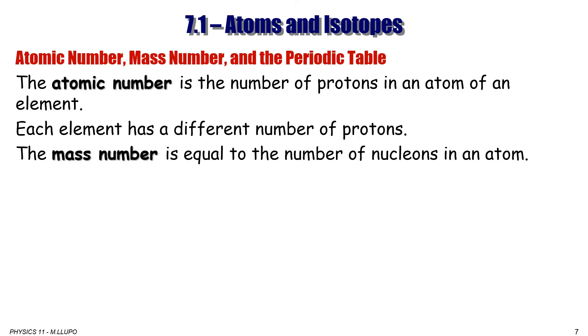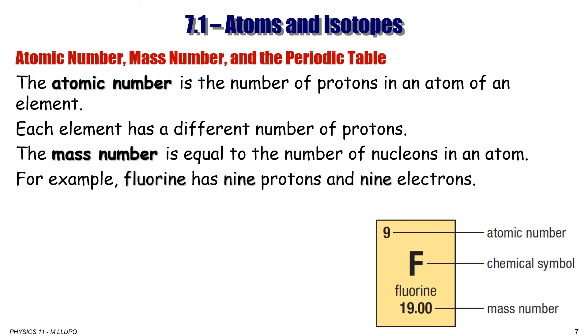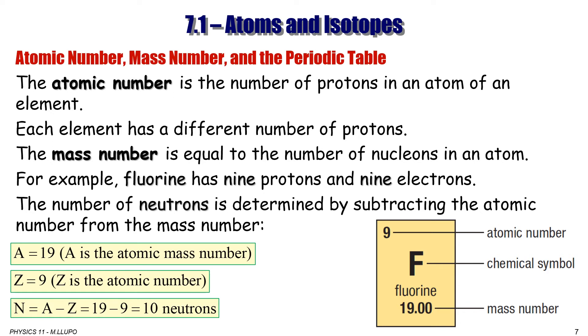Mass number, or atomic mass, is equal to a number of nucleons, or sum of protons and neutrons in a nucleus. For example, fluorine has nine protons and nine electrons. Then number of neutrons is determined by subtracting atomic number from mass number. Take a look. You have an element of fluorine, and there are two numbers on that box. The biggest number is atomic mass, which is number of protons plus number of neutrons. And the smallest number is the number of protons, or atomic number. So in order to get number of neutrons, you subtract atomic number from atomic mass. So both numbers are in that box of the periodic table. So now we can say that number of neutrons for fluorine is 10.